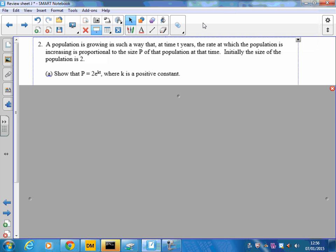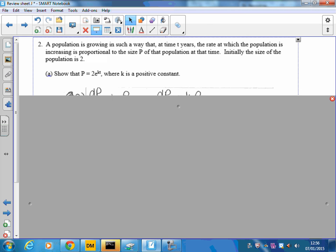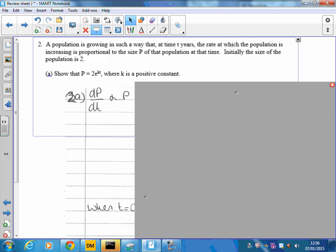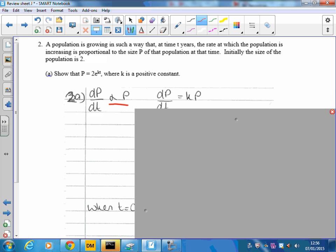So this is review sheet J, question 2, and we've got the population growing proportionally to the size of the population. So if the population is growing at a rate, that means dP/dt, changing population with time. And then that's proportional to the population at any time, so that's proportional to P. As always with the proportional sign, let's change that to equals k lots of P.